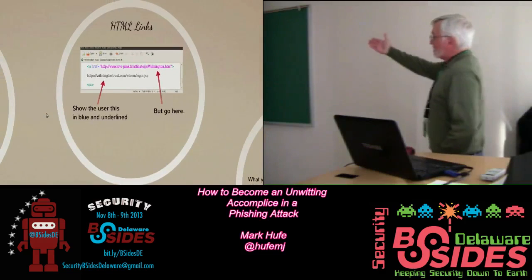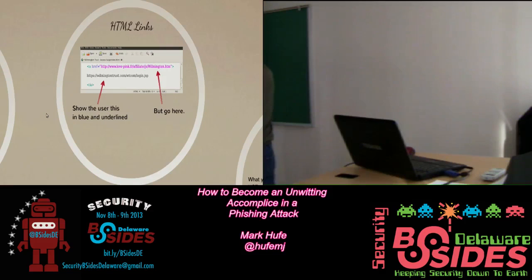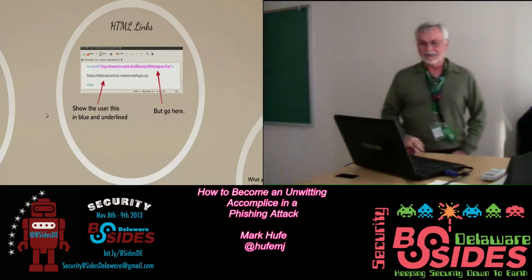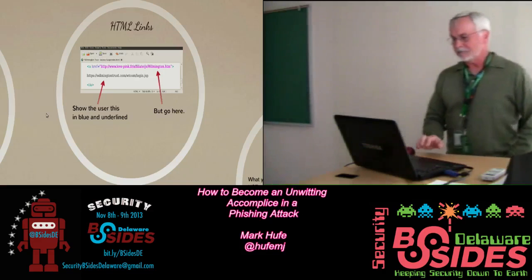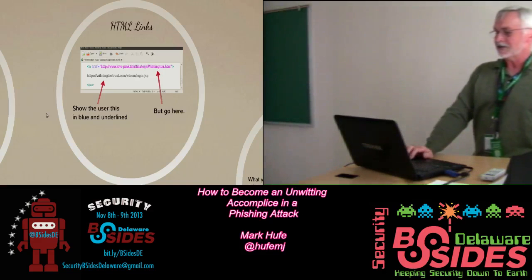So that's what you see, but if you hover the mouse pointer over it, you get a look at the bottom of the status bar. And this particular one goes to Love Pink in France — so it's not really Wilmington Trust. That's because in HTML, you've got a piece that shows up in blue which can just be clicked, showing the URL the perpetrator wanted it to look like, and then in magenta is where it actually goes.